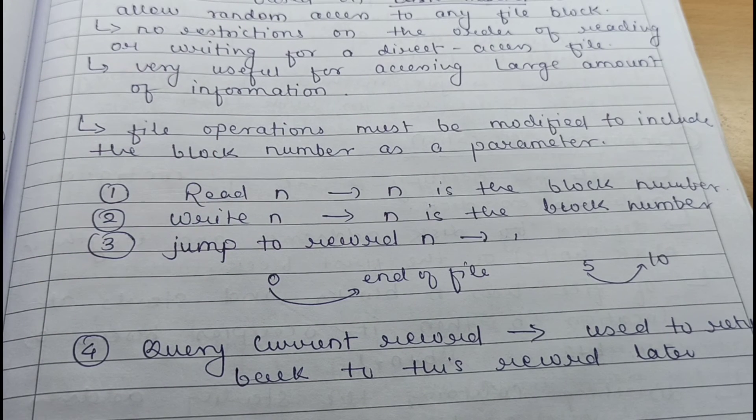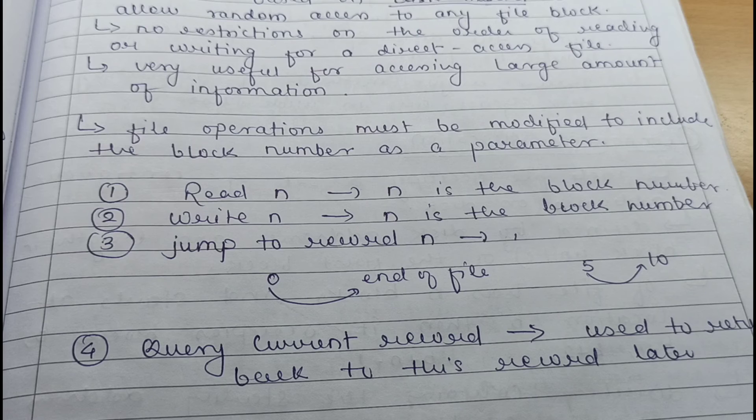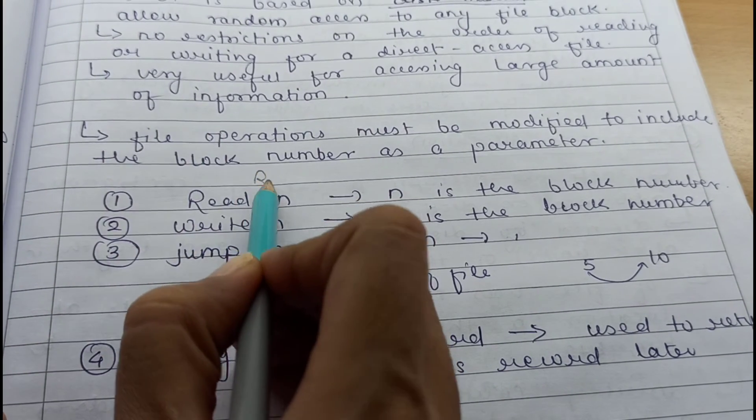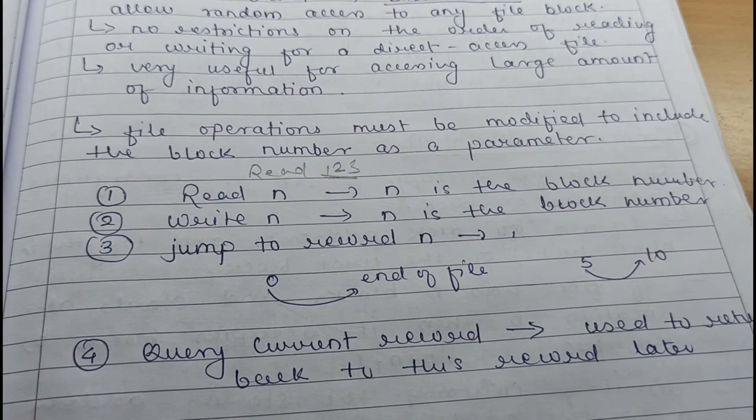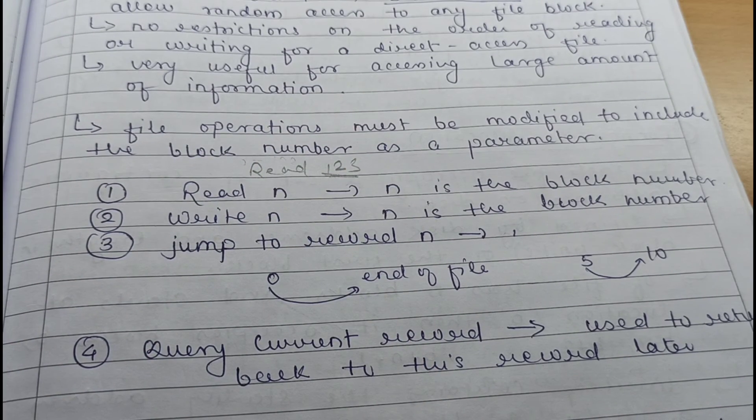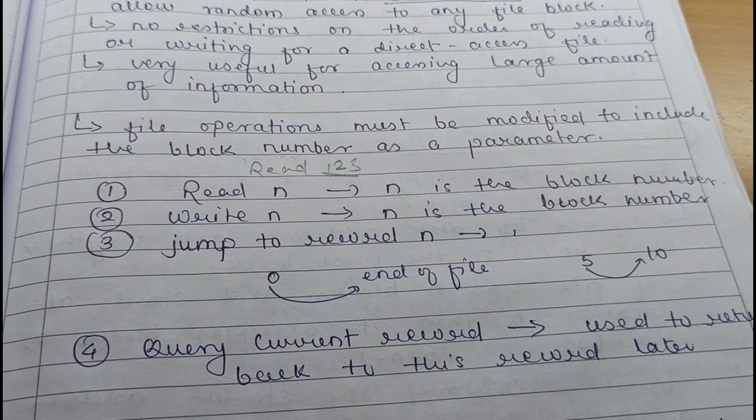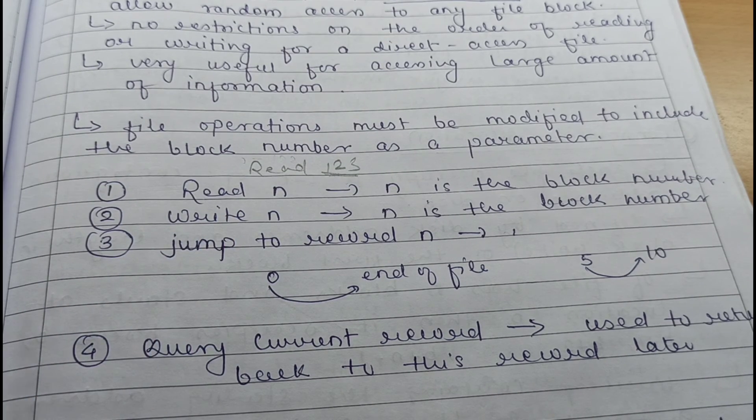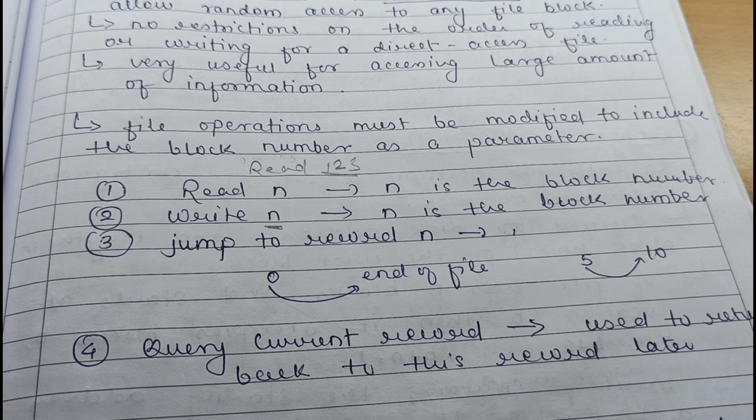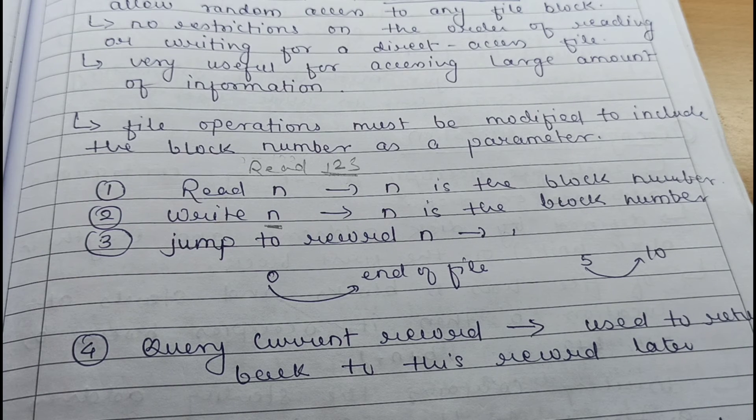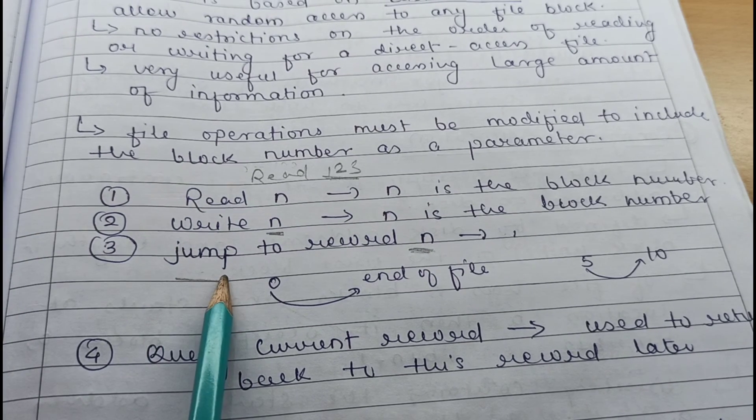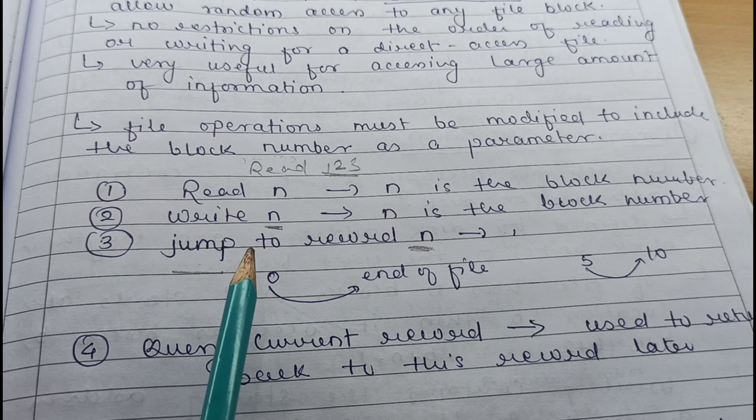We access the file blocks by directly giving the block number, like read 123. To access the 123rd record, you need not go from 0 to 122. You can directly move to the 123rd block. In the same way, if you want to write to a particular block, write and then the block number can be given. You can directly go to that block and then access, then write and update the write pointer. That means you can directly jump to the nth block number. You need not go sequentially. So this is called direct access or you can say random access.